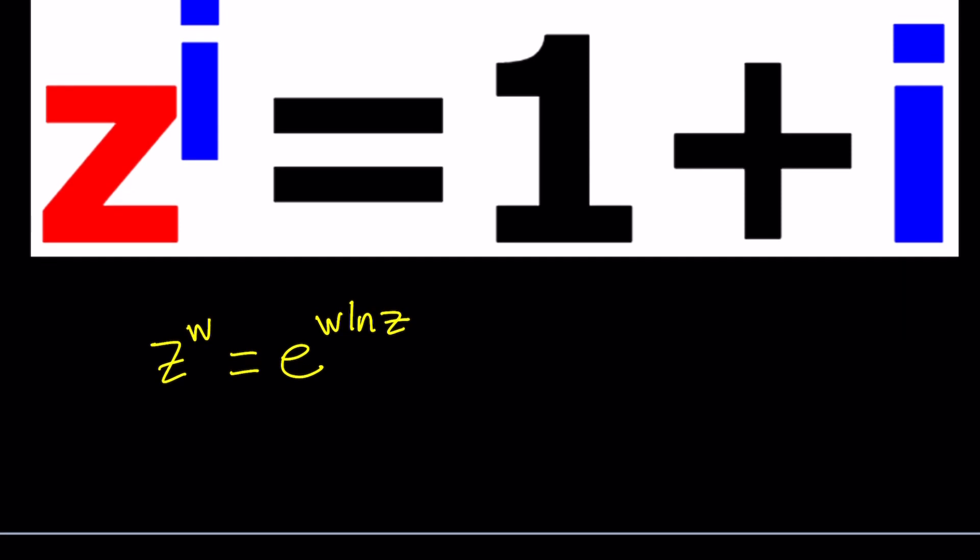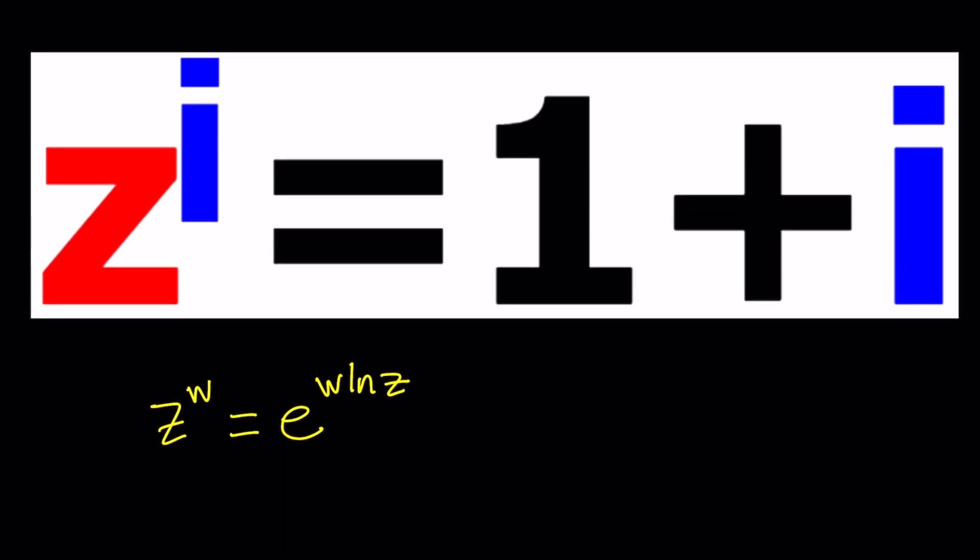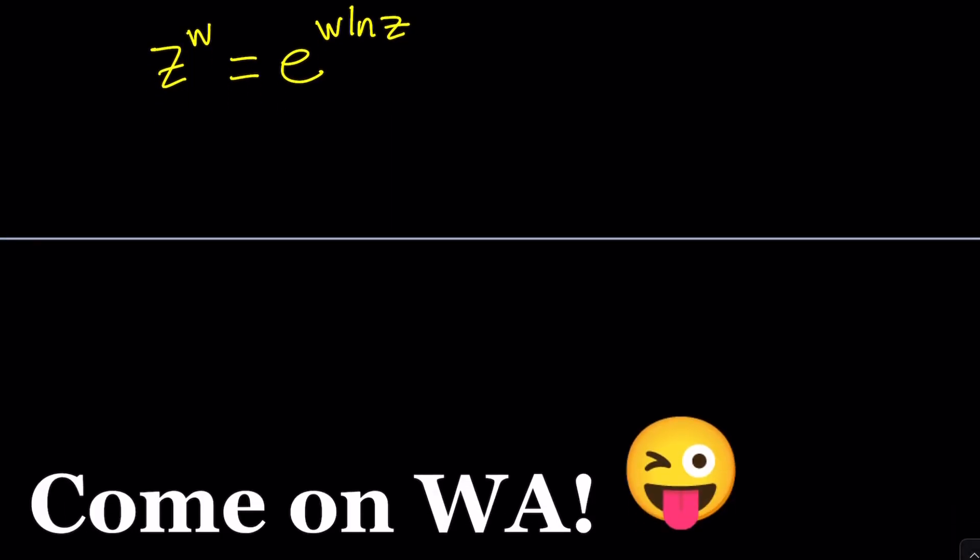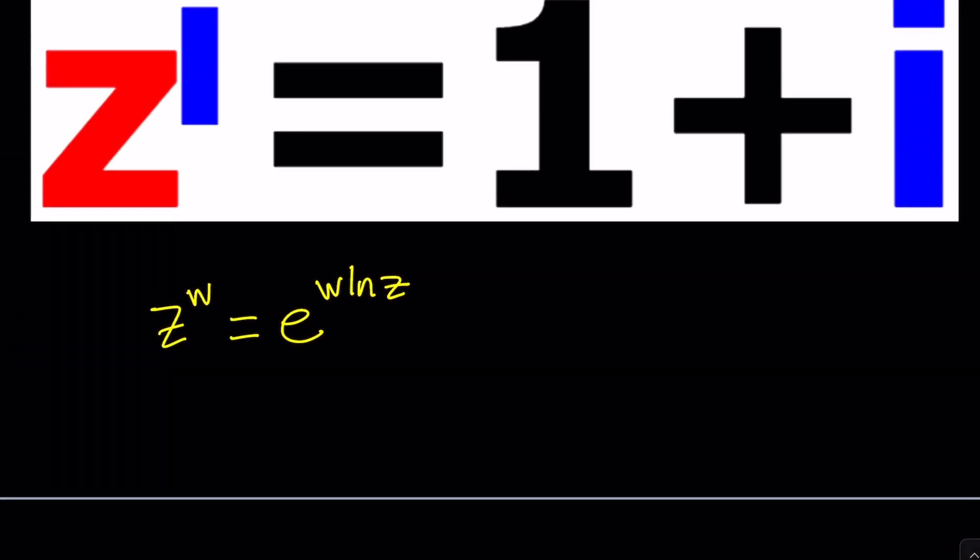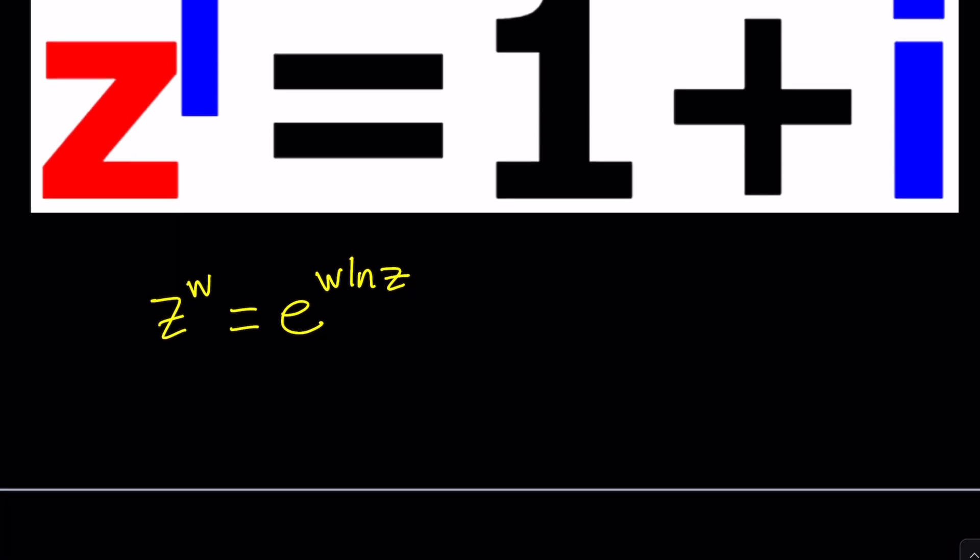But before we get into the solution I just wanted to share with you what Wolfram Alpha is supposed to offer for this and I'm like come on Wolfram Alpha you can do better than this right. Just raise both sides to the power negative 1 over i and you're going to get z by itself. Great. Okay so let's see how we can use this information to solve for z.